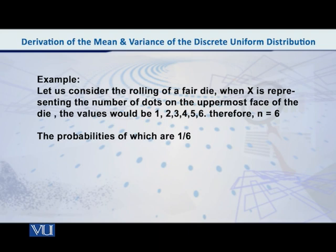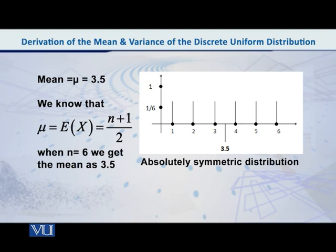Alright. After this, to visualize this, what probability is attached with each one? It is 1 by 6, because it is a fair die.